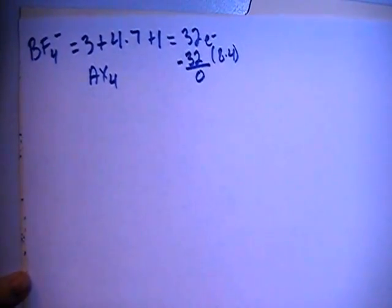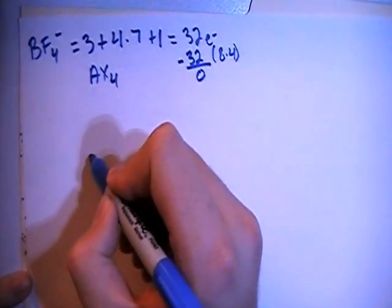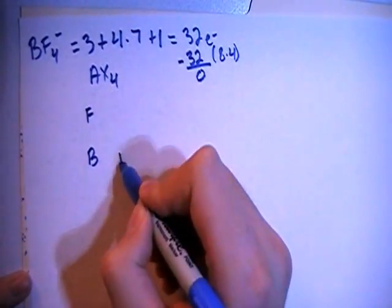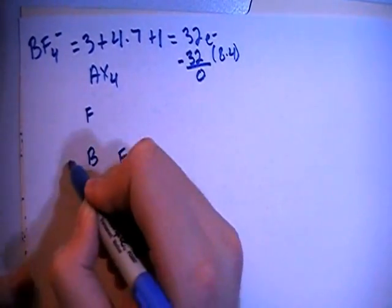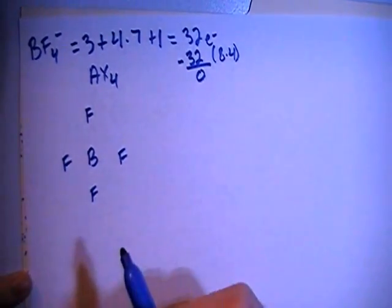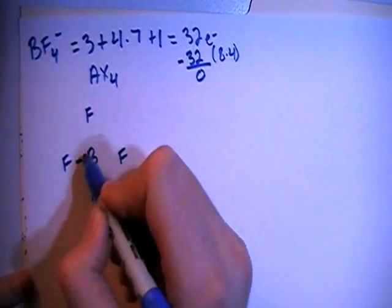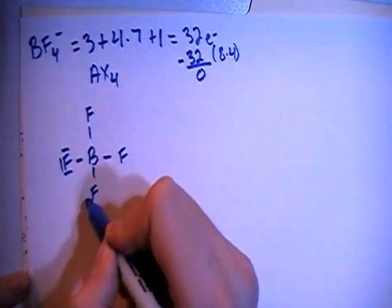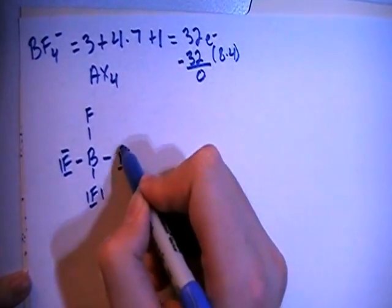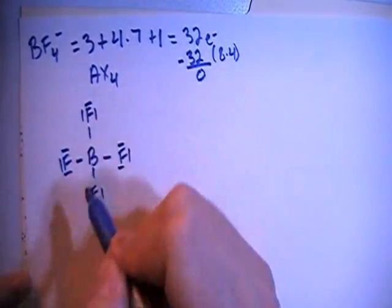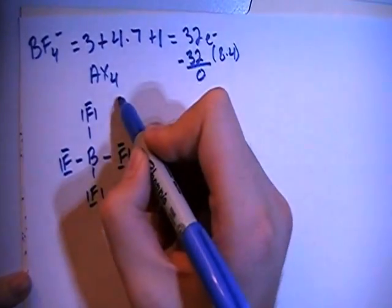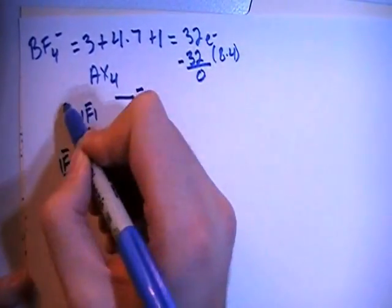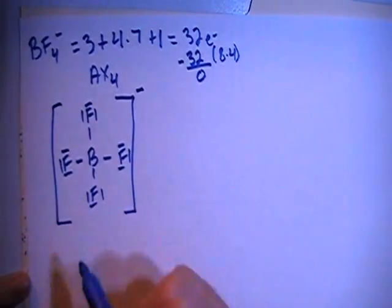So let's go ahead and draw this structure. We're going to put the boron in the center surrounded by the four fluorines and then we can go ahead and single bond all of the fluorines to the central boron and then fill in the octets for each of the fluorines and that's pretty much it. We also have to include the brackets because this is an ion so you have to put the charge up top here but that should be our final structure.